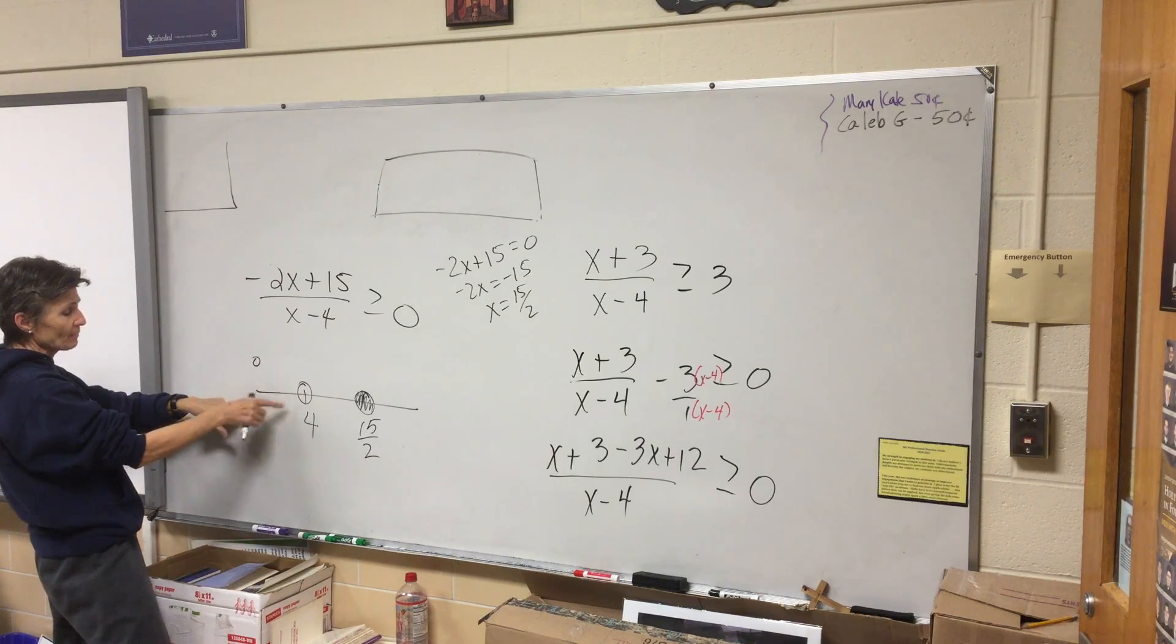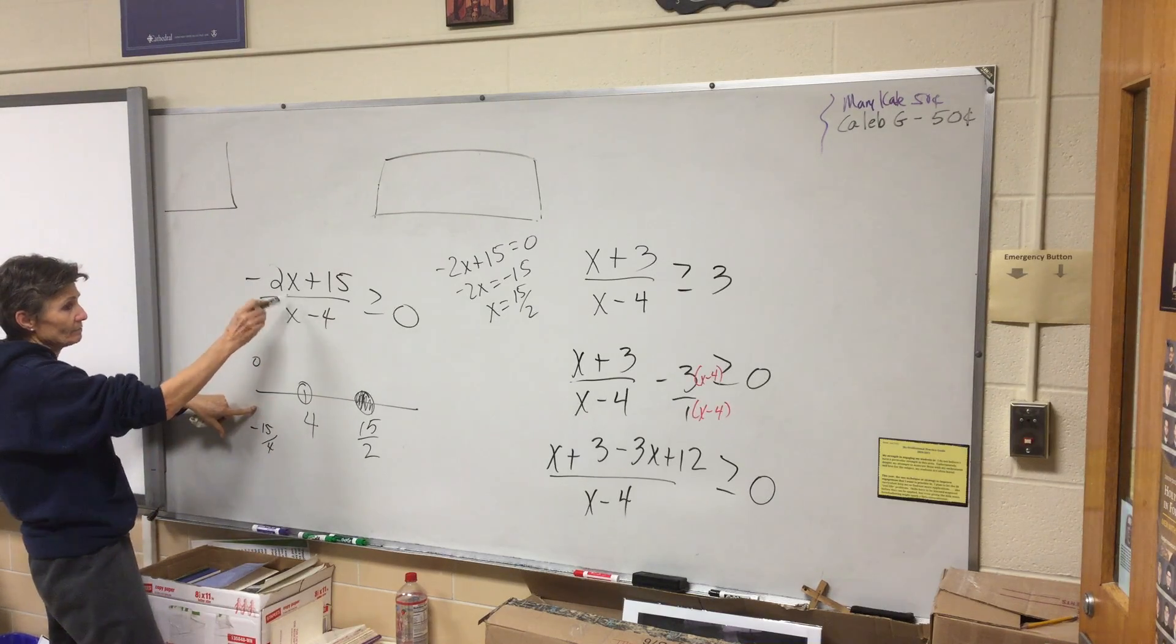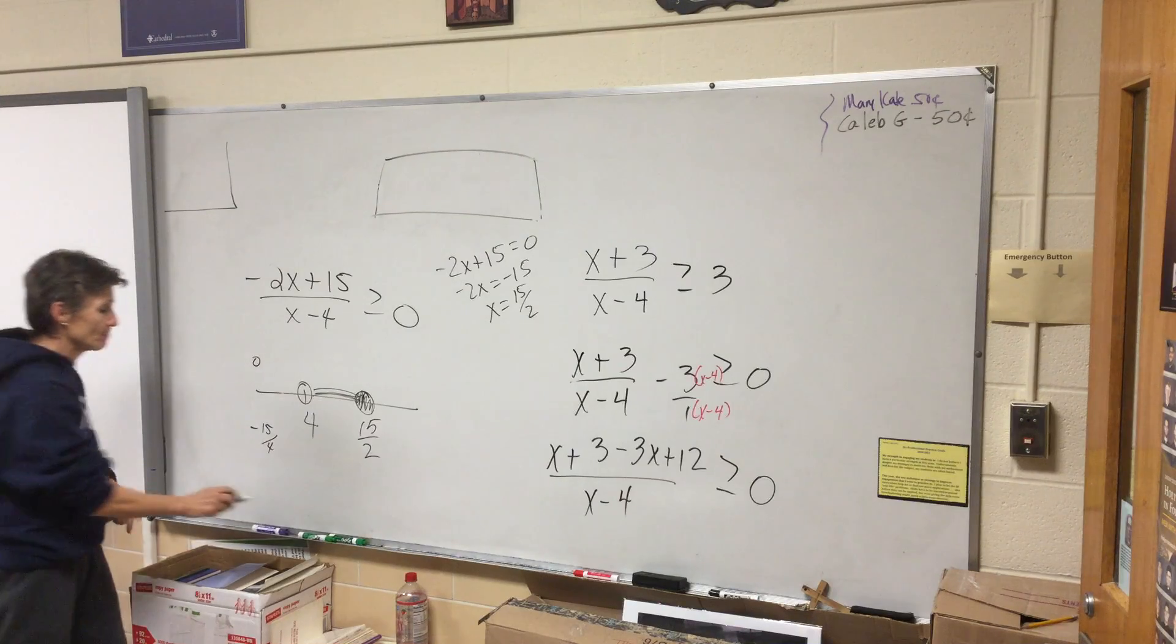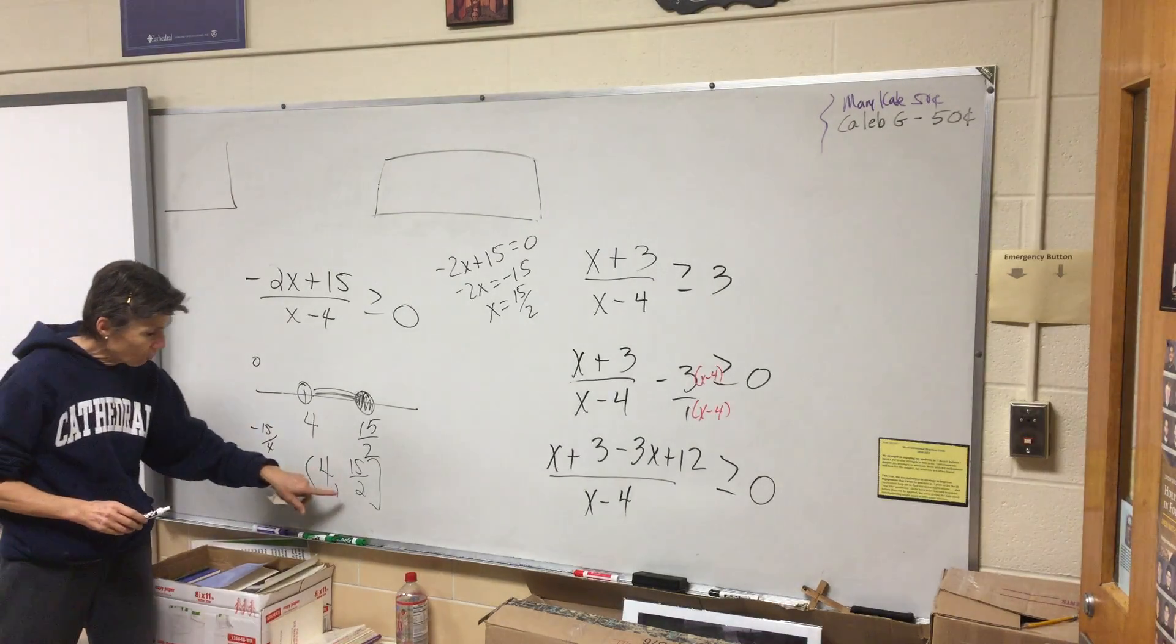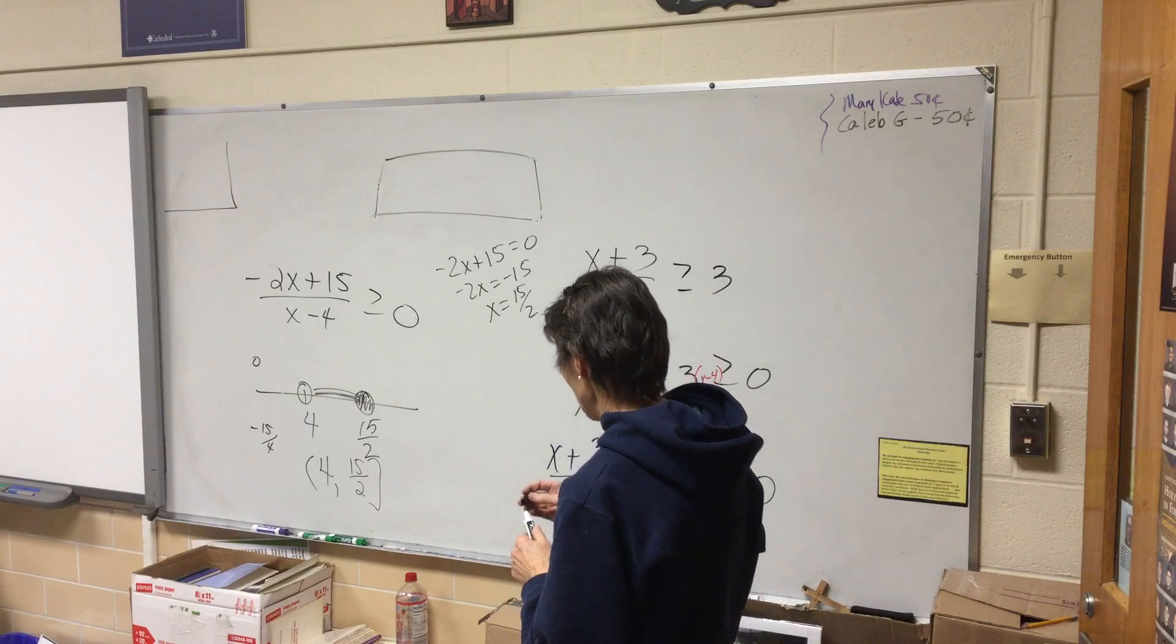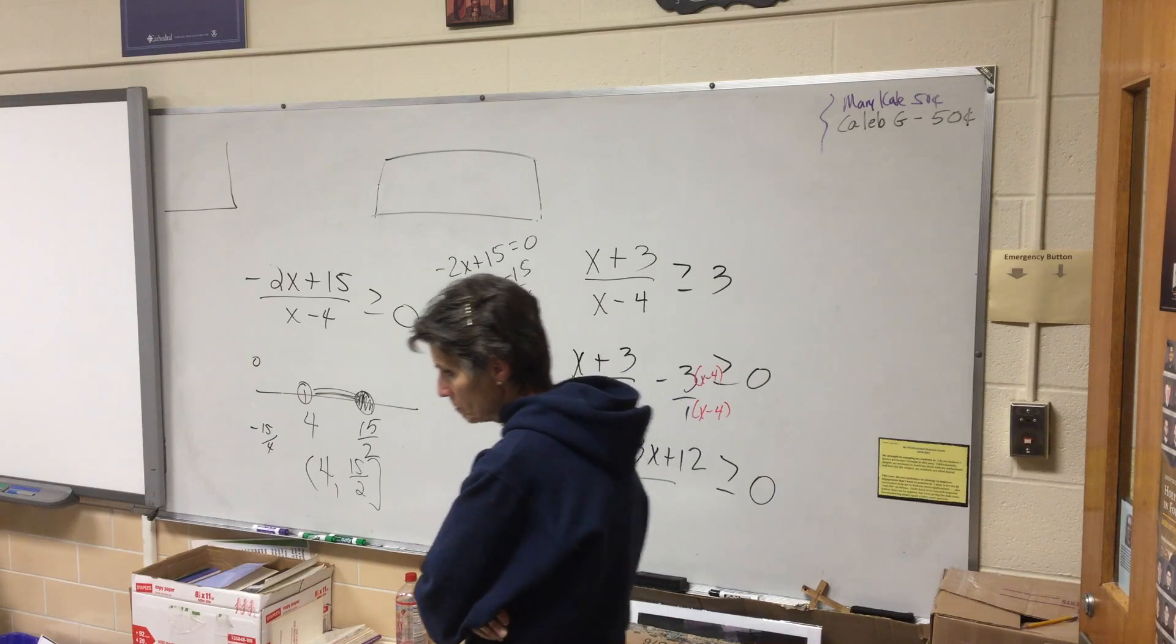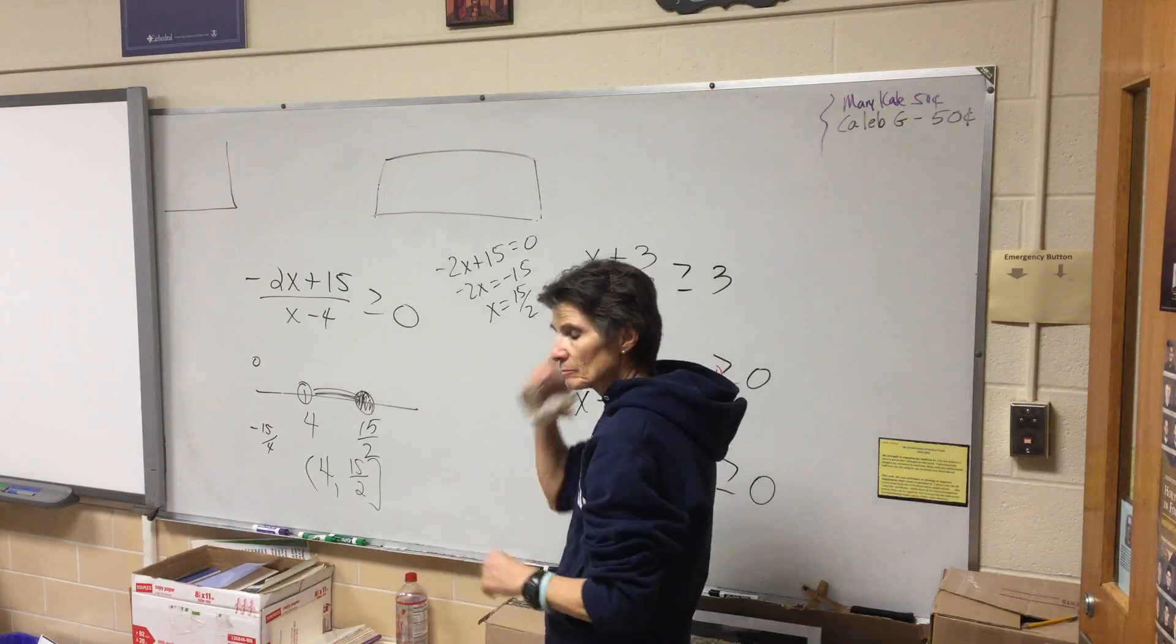But I don't know where to shade. I'll just try zero. Zero gives me negative fifteen-fourths. I put a zero in. Is negative fifteen-fourths bigger than zero? No. So I don't shade this section, which means I do shade this one and I don't shade that one. So my answer is parentheses four, fifteen halves bracket.